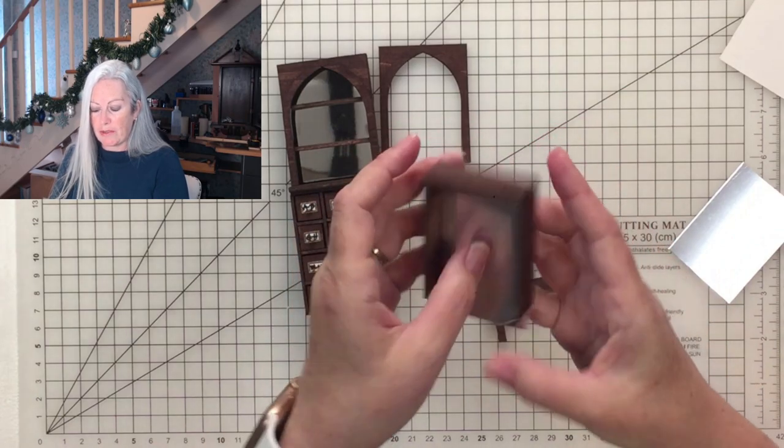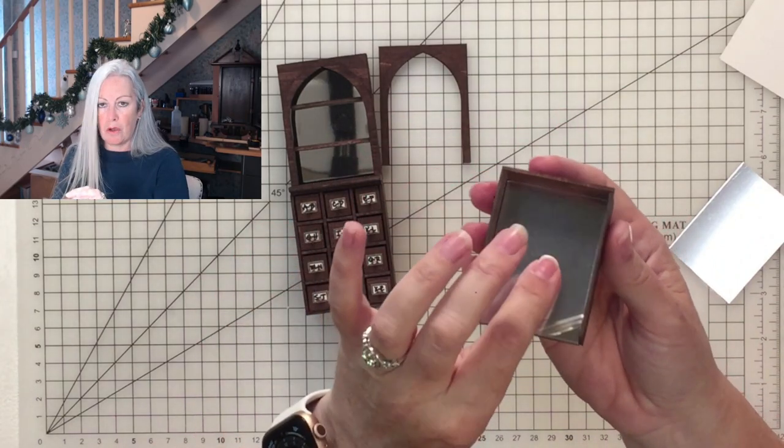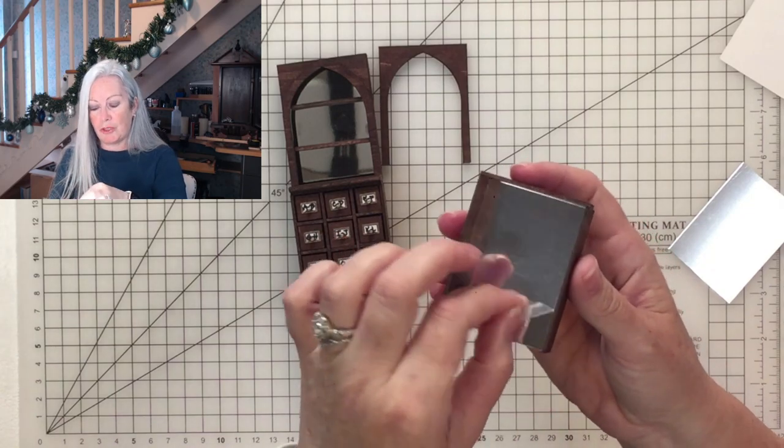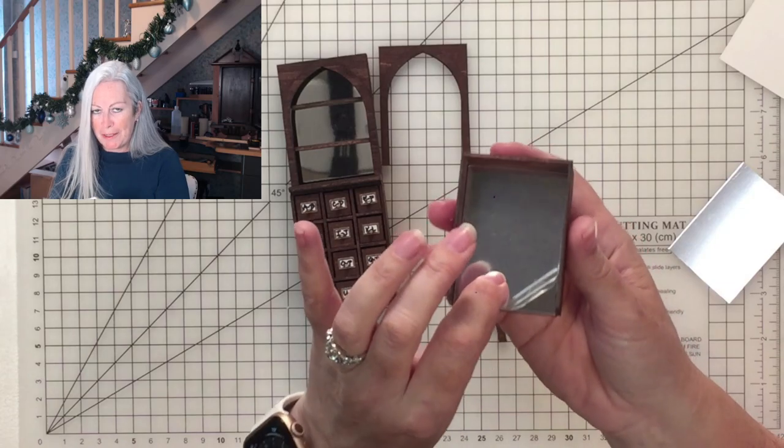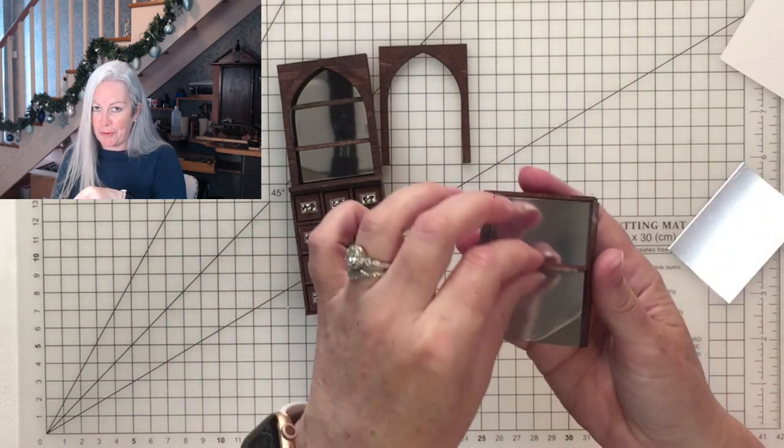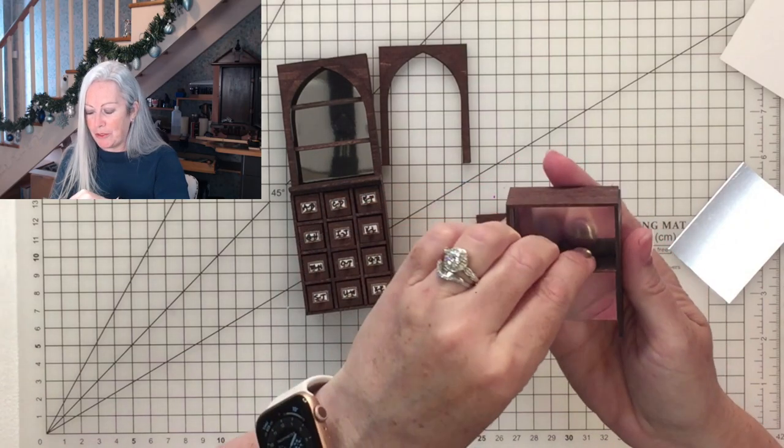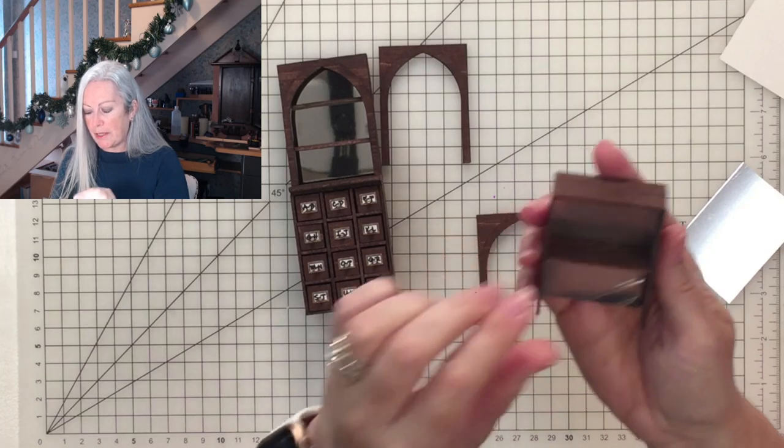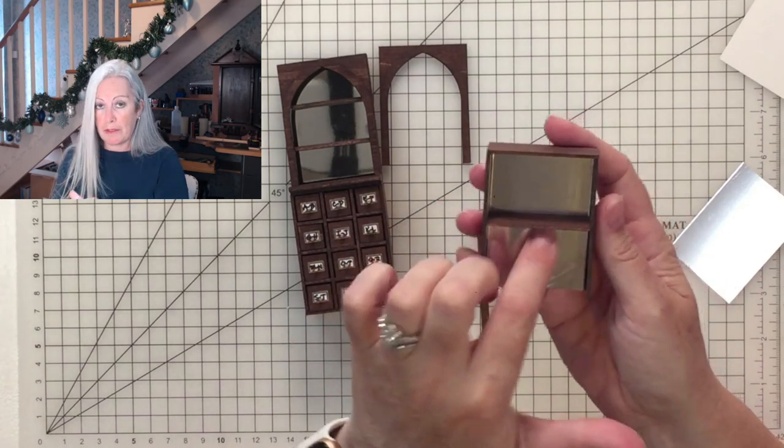I like to leave that on whilst I do the gluing so I can press down on the mirror and not get marks on the actual shiny piece of the mirror. So glue your mirror down, then take off your protective layer, then put your shelf in. Otherwise it'll be very difficult to do it the other way around.